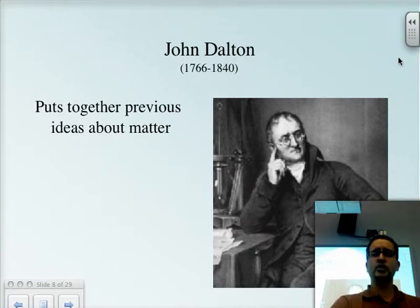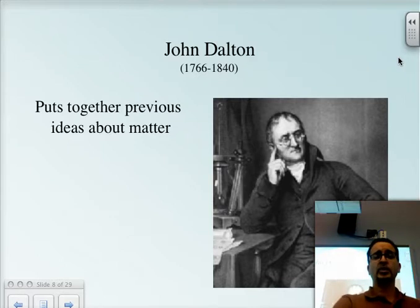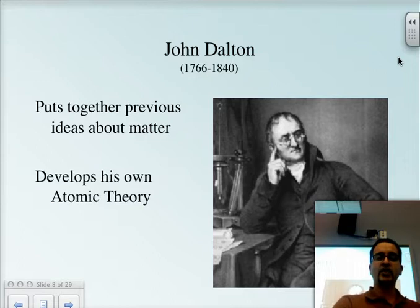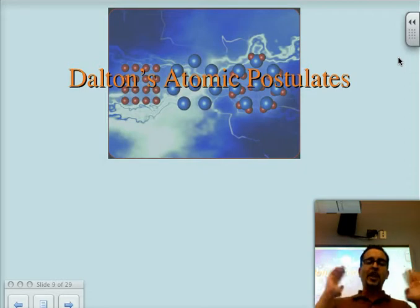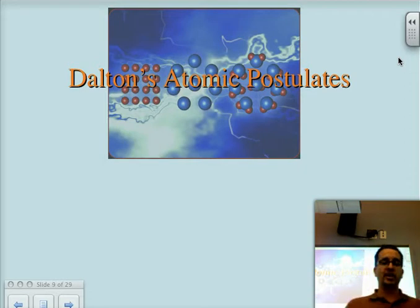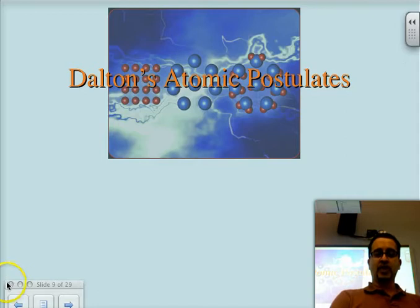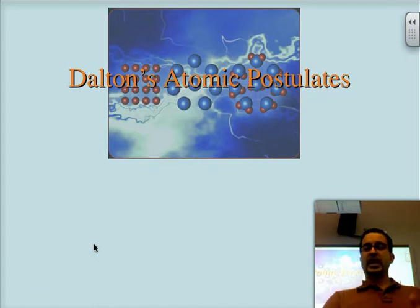He's going to put together ideas from Lavoisier and Proust and even some of the ideas that came from the ancient Greeks, and he's going to develop his own atomic theory. He's going to base it on four postulates — four basic pillars on which he is going to be talking about the atom.